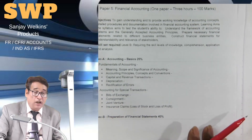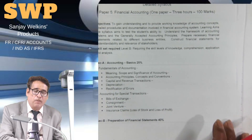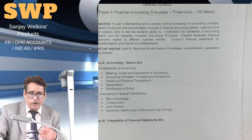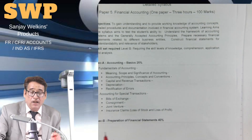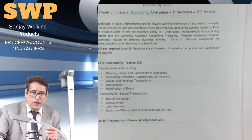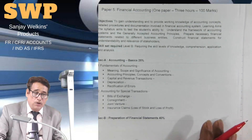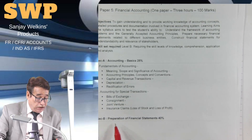Under insurance claims, you will learn that most business houses get their stock insured, since stock plays a vital role in the production process. If there is a loss of stock, how is the insurance claim demanded and calculated — that is the core issue. Besides that, sometimes business houses take a loss-of-profit policy, and since they have insured those losses, how the claims will be computed becomes the theme of this particular chapter.